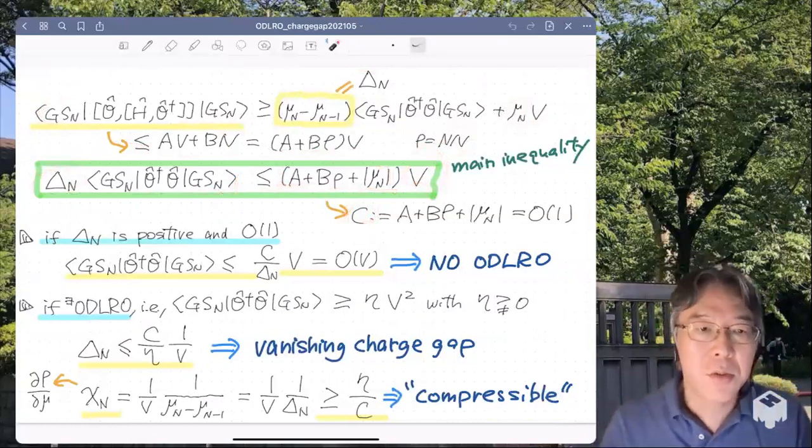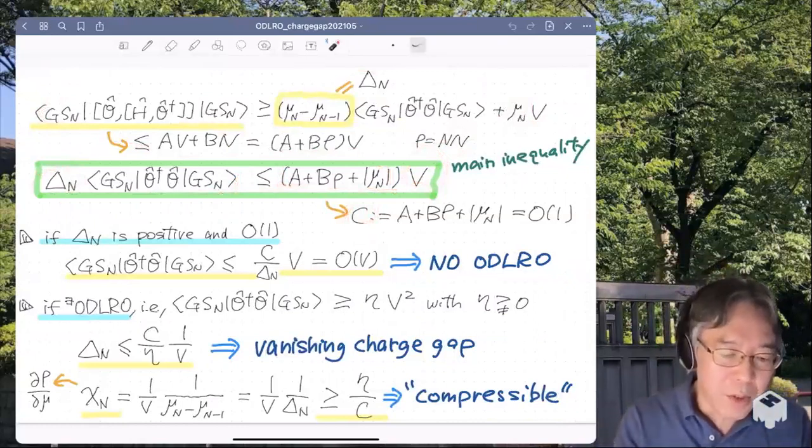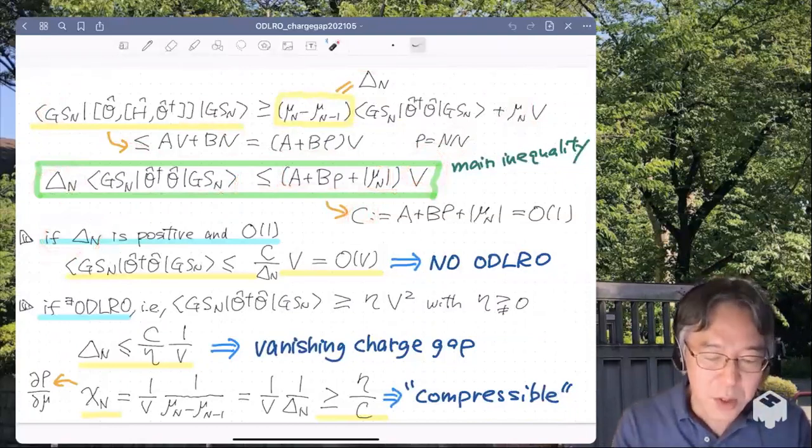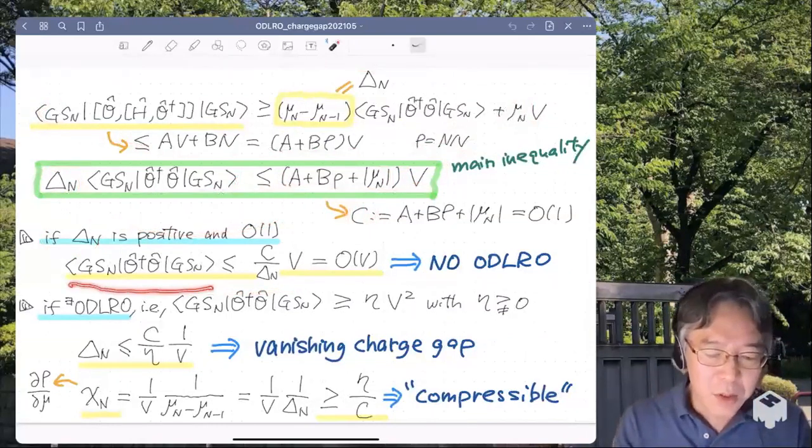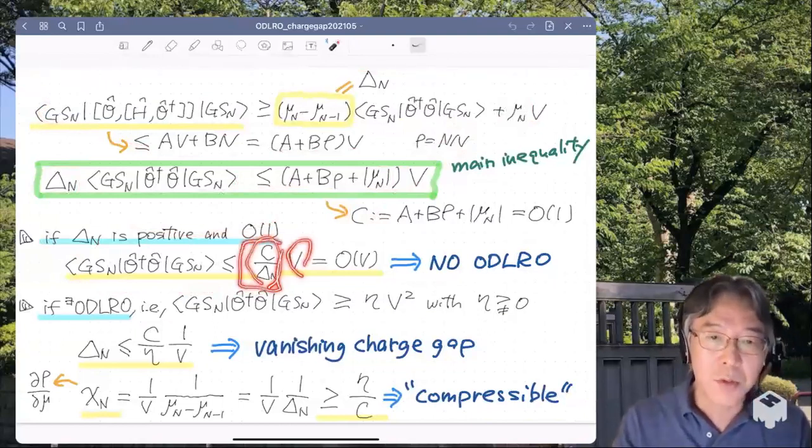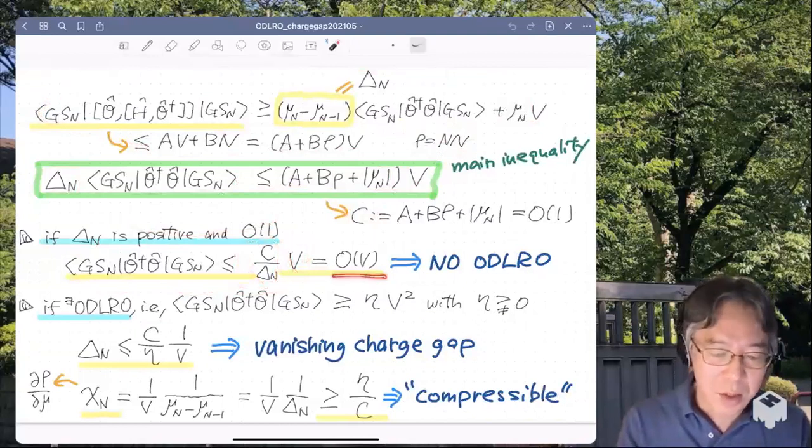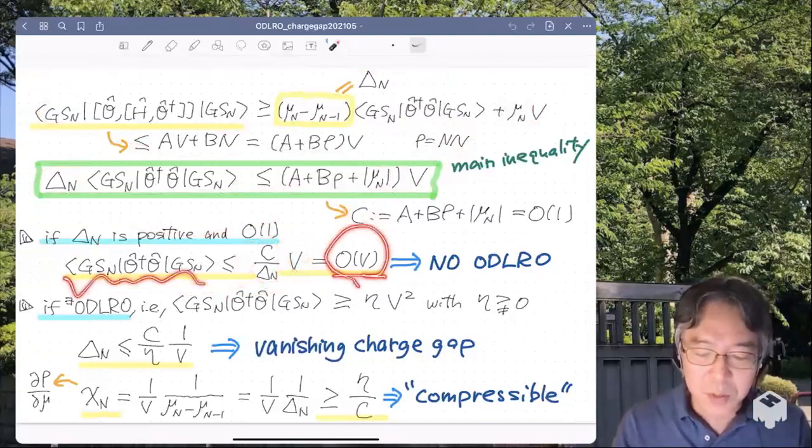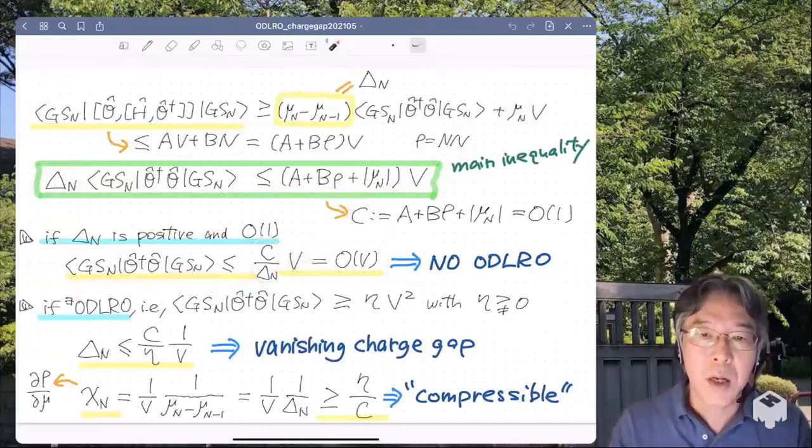So let's look at two applications. First of all, I assume that the charge gap is positive and of order one. Then by bringing this guy here, I get this inequality. So the expectation value of O dagger O is upper bounded by C over delta_N times V. But this is of order one. So you see that this guy is at most of order V. So we conclude that there is no off-diagonal long-range order by definition.